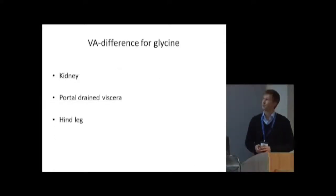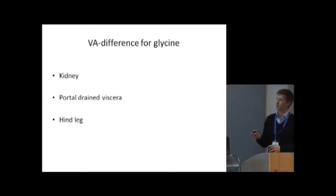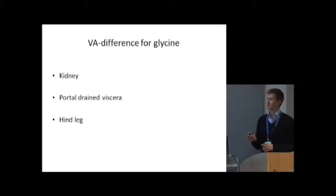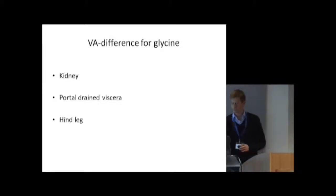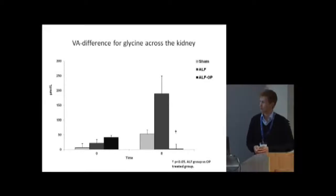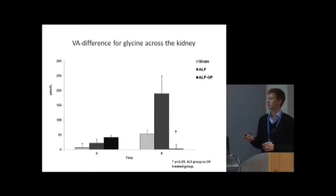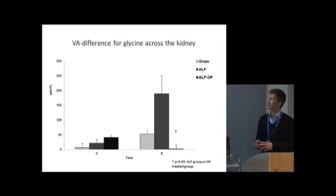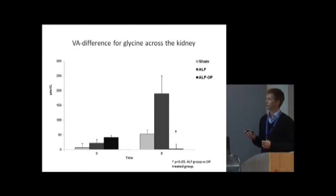We then looked at the venous-arterial differences for glycine across different organs — the kidneys and the hind leg. However, we could only find significant changes across the kidneys. This graph shows venous-arterial differences for glycine across the kidney at time 0 and time 8. We found an increase in net glycine release in the ALF animals that was significantly attenuated to no net release or uptake across the kidneys in the OP-treated animals.